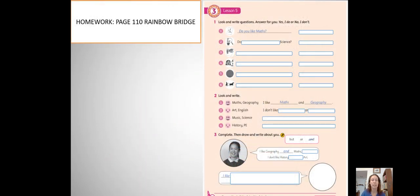Y homework van a ser la página 110 del libro Rainbow Bridge. Esto es de tarea. Miren, son tres ejercicios. Number one. Look and write questions and answers for you. Esto sí es personal.